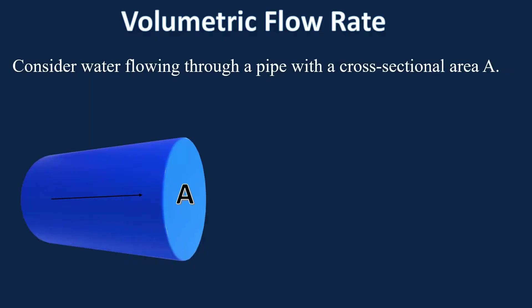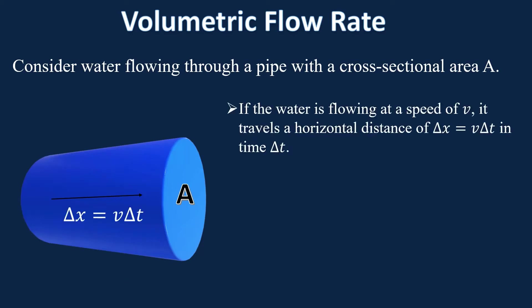The first thing to look at is volumetric flow rate. Here's a pipe with water flowing through it. It has a cross-sectional area of A. There's not going to be any fixed length of the pipe, so we define the length of the pipe as V delta T. V is the speed of the water in the pipe, and delta T is just some time frame. The distance it goes through, delta X, in some time frame is V delta T. That's from kinematics.